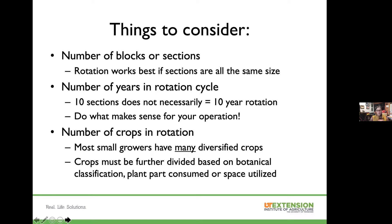At the UT Organic Farm we have half-acre plots, so we rotate around our different crop families and cool and warm season crops. We also have multiple high tunnels, which makes rotation easier — but we know that not everybody has the luxury of multiple tunnels. The last thing to think about is the number of crops in your rotation. Most small growers will grow many diversified crops, but in high tunnels we tend to get into a pattern of the same crops over and over because they're profitable.